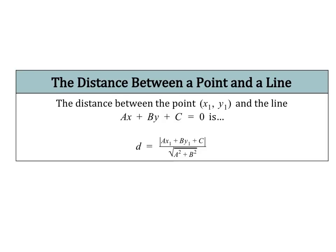Now we're going to learn a new formula to help us find the distance between a point and a line. The shortest distance between any point and a line is the perpendicular distance. We have a point x1, y1, and the line in general form: ax plus by plus c equals 0. We don't typically see linear equations written like this, so if it's not, rewrite it in this form. The formula for the distance is the absolute value of a times x1 plus b times y1 plus c, all over the square root of a squared plus b squared.